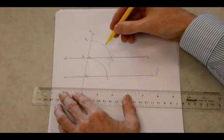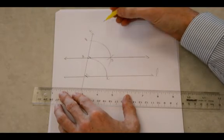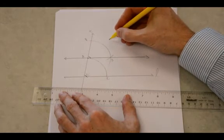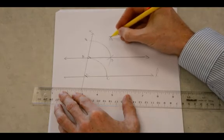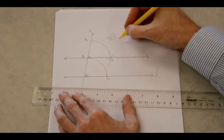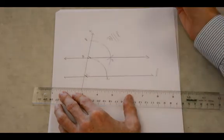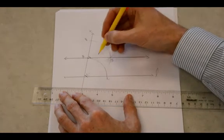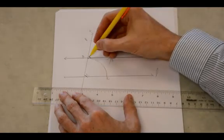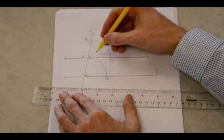So by the converse of the corresponding angles theorem, I can say that line AD is parallel to line L, or I can also call it line EC if I wanted to. These two lines are parallel, and the reason why is because the corresponding angles are congruent.